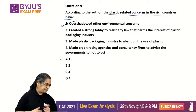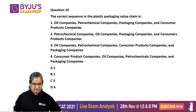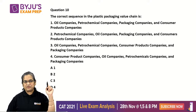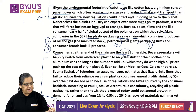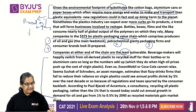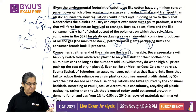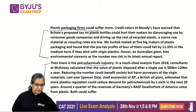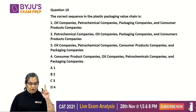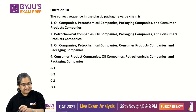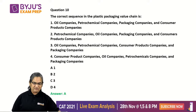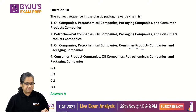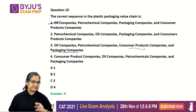Next question: the correct sequence in the plastic packaging value chain. We covered that. Producers of oil and gas → petrochemical giants → packaging firms → consumer brands. Look at the option that gives us that: oil companies, petrochemical giants, packaging companies, consumer product companies. Option 1 fits. One is correct — here consumers comes before packaging in another option, but he talks of packaging before consumers. So between 1 and 3, option 1 is correct. Mark A.